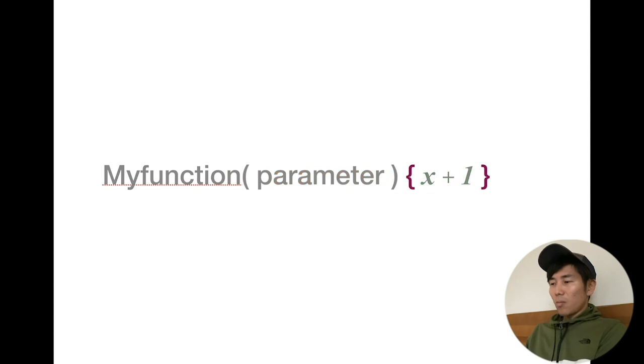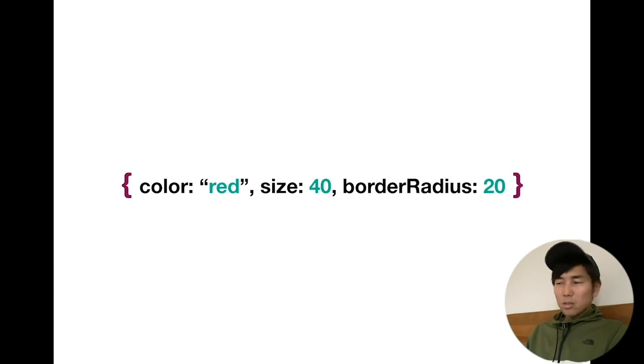We also use curly brackets to enclose objects. Objects are something like a visual element on the page, or it could be like a user or an item, or something that needs to be regarded as an object. If we talk about visual elements, we'll put inside the curly brackets the attributes: what is the color, size, border radius.